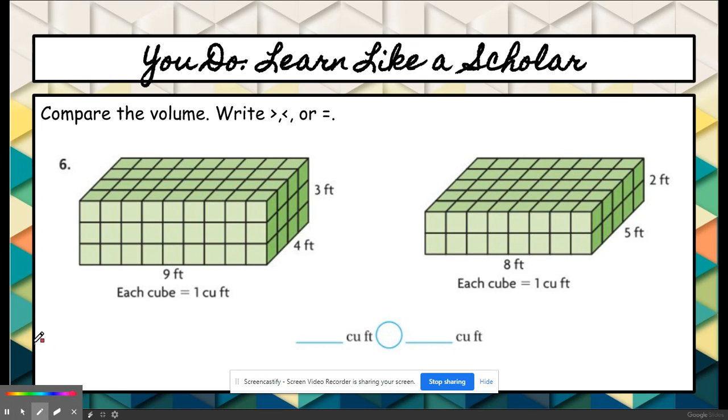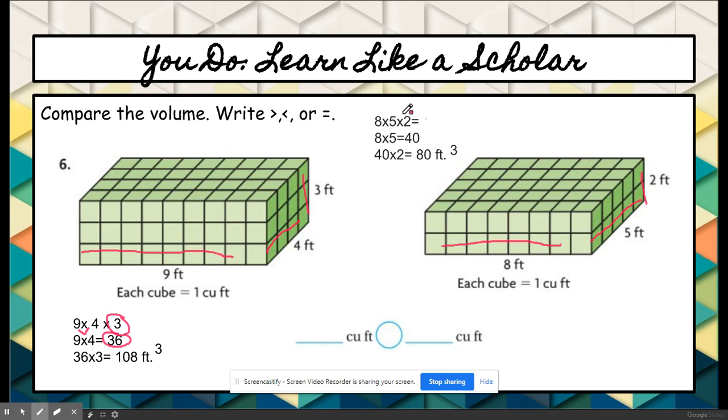Here we are on the next one. If you are still struggling, I'll walk you through it. Otherwise, pause here and try to solve it on your own. We know that volume is length times width times height. The length they've given us is 9, the width was 4, and the height was 3. 9 times 4 is 36, and 36 by 3 is 108 feet cubed or cubic feet. Now here we do the same thing: length is 8, times width which is 5, times height which is 2. 8 times 5 is 40, and 40 times 2 is 80 feet cubed. So we're comparing 108 cubic feet to 80 cubic feet. The 108 is larger, so our symbol should be pointing at 108.